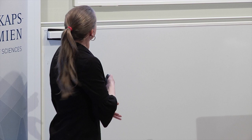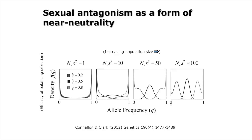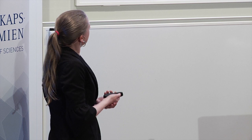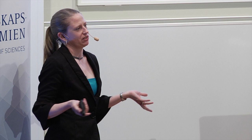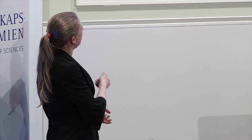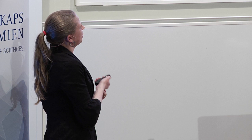They also showed that the efficacy of balancing selection will be dependent on population size. As you increase population size, selection gets more efficient — everybody knows that selection is more efficient if it's stronger. The interesting thing is that even for a species such as Drosophila, which has really large population sizes, you're probably in the one-to-ten range when talking about antagonistically selected alleles, which means that such alleles will be behaving as if nearly neutral most of the time.